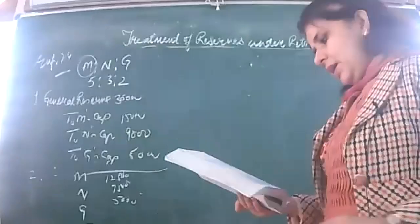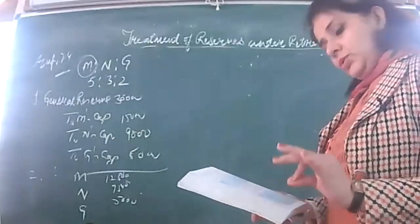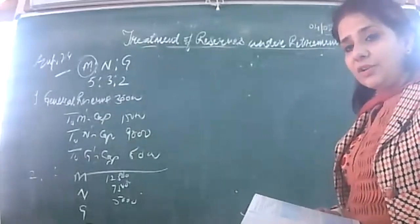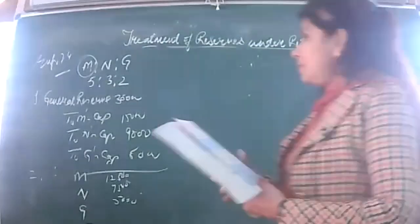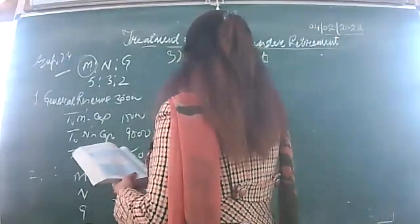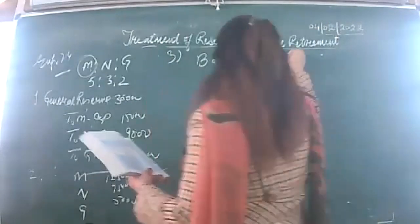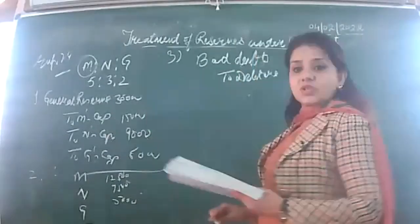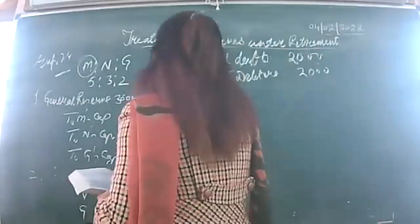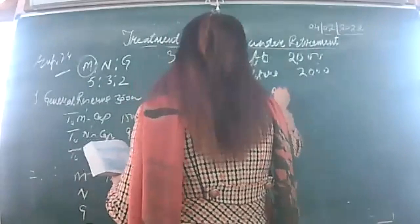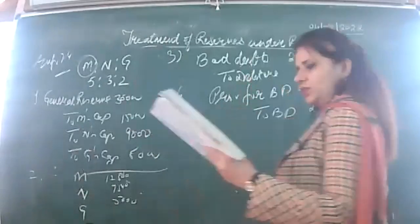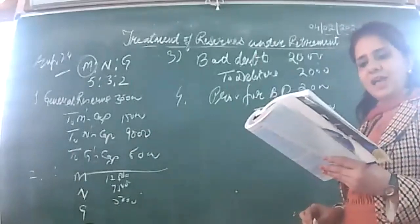Reading point 1: debtors of 2,000 which are to be written off as bad. If provision is already appearing in the balance sheet, to write off bad debts you utilize your provision. First entry: bad debts account debited to debtors — 2,000. Then provision for bad debts has 5,000. Now maintain provision at 5% — that comes to 2,150. Still 3,000 remains with me after using 2,000, so 850 is in excess.